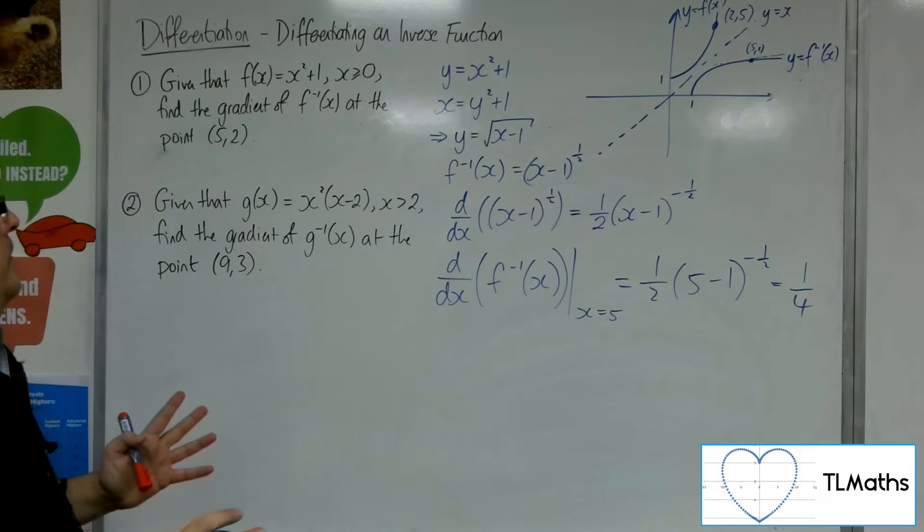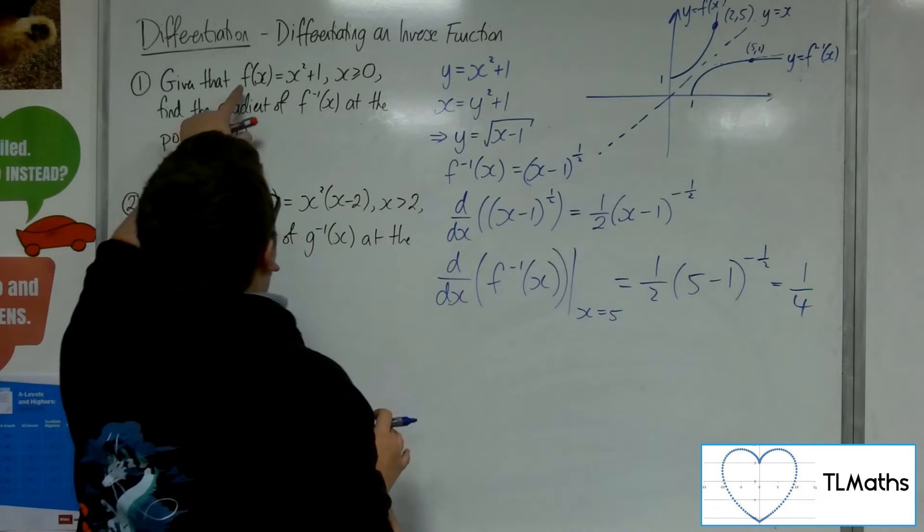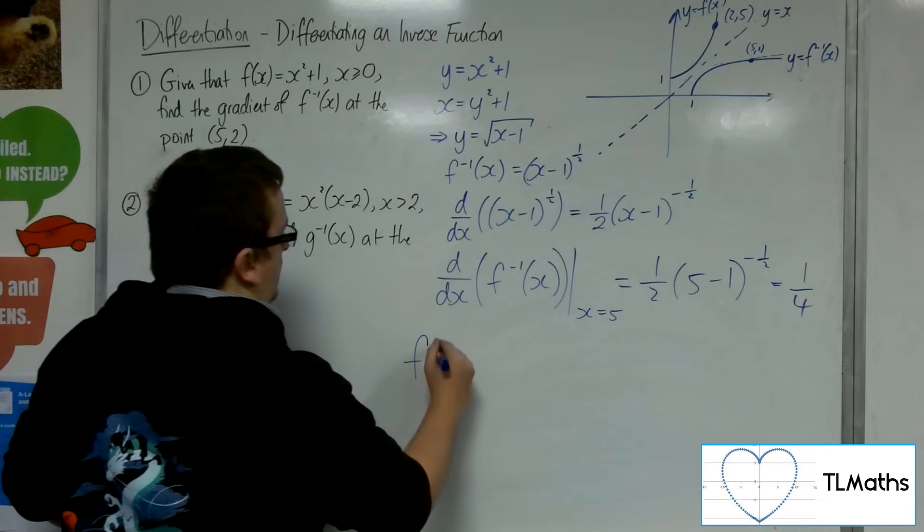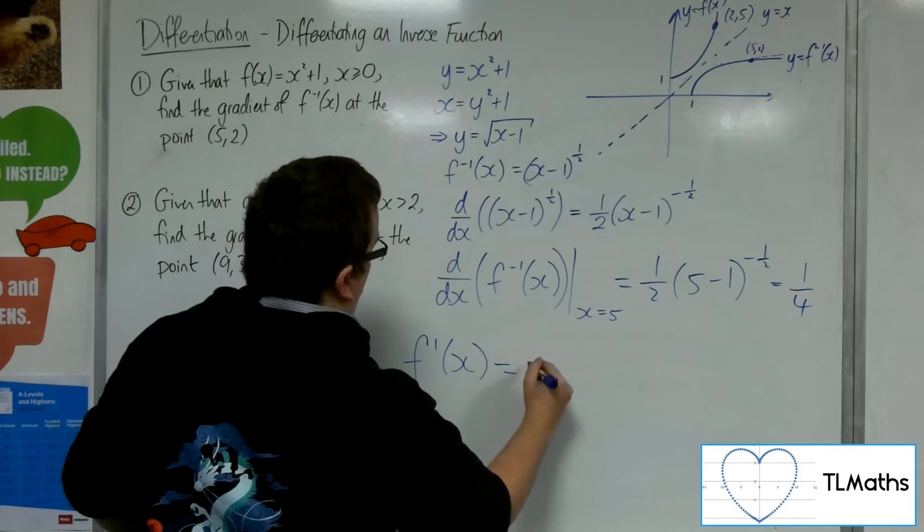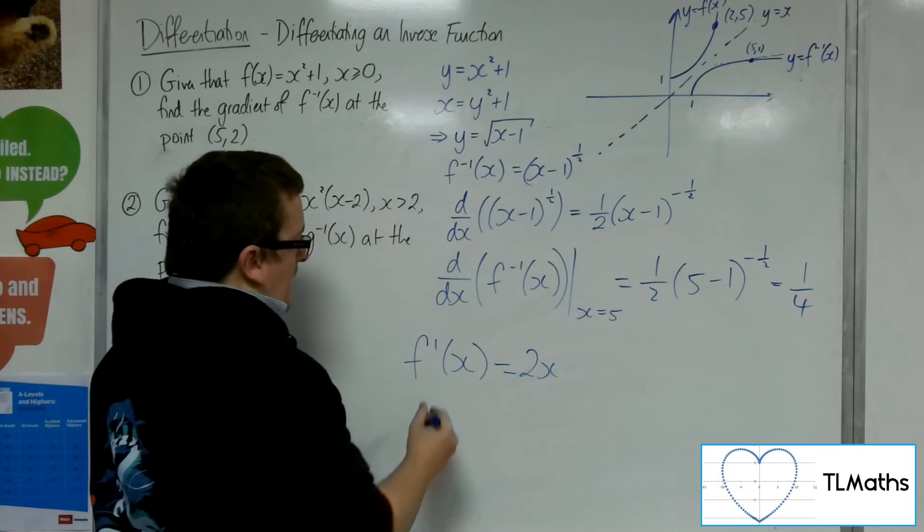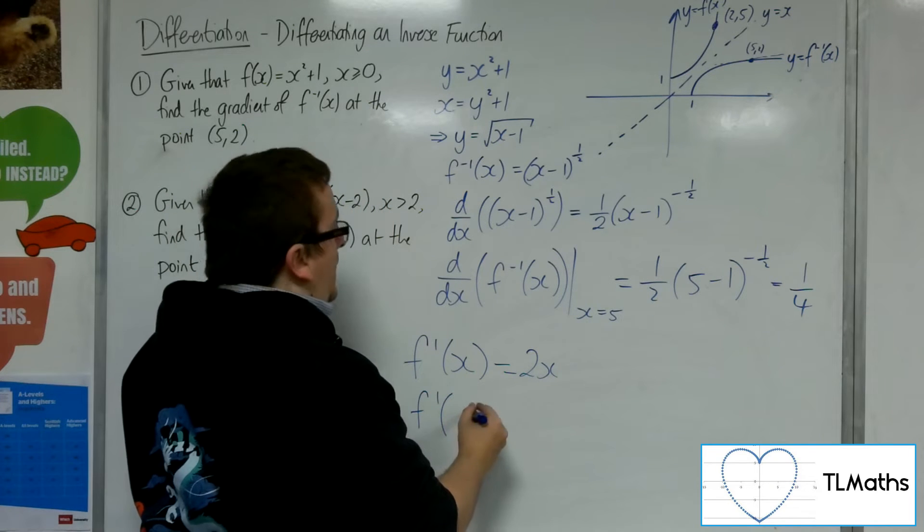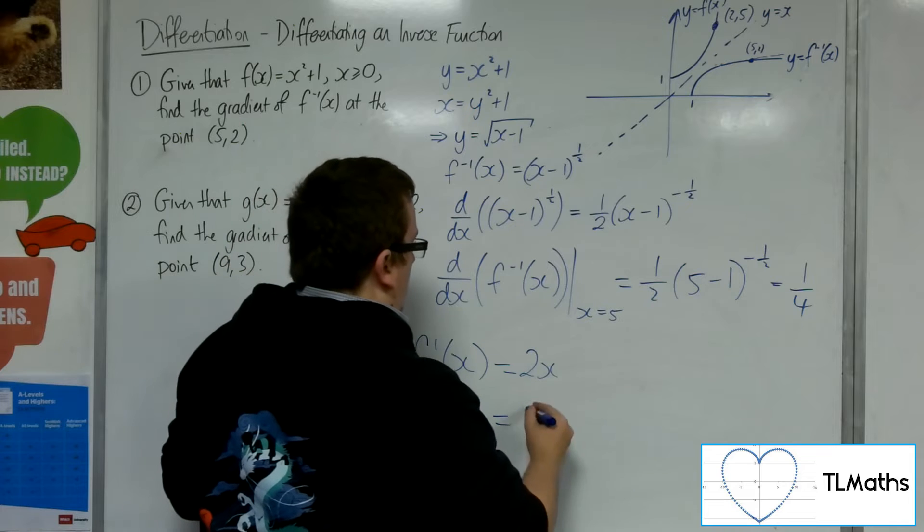Let's see. So what I'd need to do is I'd need to find f prime, which is 2x. And then I'd substitute in the x value of 2, and I get 4.